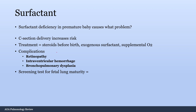Surfactant deficiency in a premature baby causes neonatal respiratory distress syndrome. C-section deliveries increase the risk of neonatal RDS because vaginal birth is stressful — the compression releases cortisol, which promotes surfactant secretion and lung maturation. C-section babies don't experience that stress, so they don't get that cortisol surge or the same lung maturation. Treatment for neonatal RDS includes steroids before birth, exogenous surfactant, and supplemental O2.